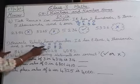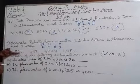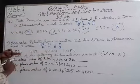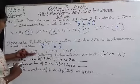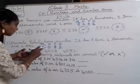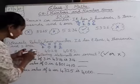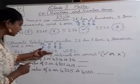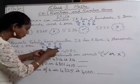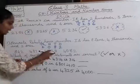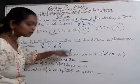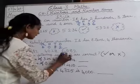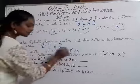Now we find 4082 in the options. First option 842 — not matching. Next option 482 — not matching. Next option 4028 — not matching 4082. The last option is 4082, which matches 4082. So we circle 4082 as Rahul's house number.